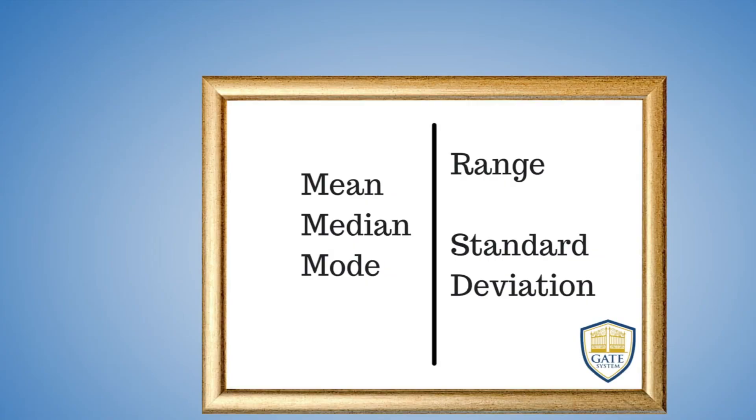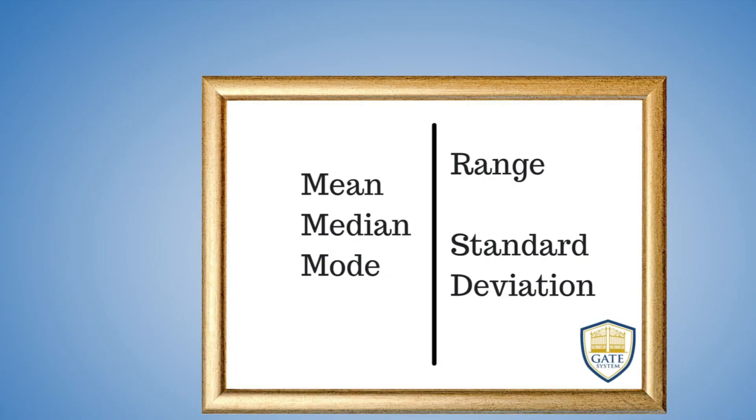You'll see data sets and questions involving these forms. Mean, median, and mode are measures of center for data. Standard deviation and range speak to how data is spread apart. You won't be asked to calculate standard deviation, but you should familiarize yourself with the meaning.